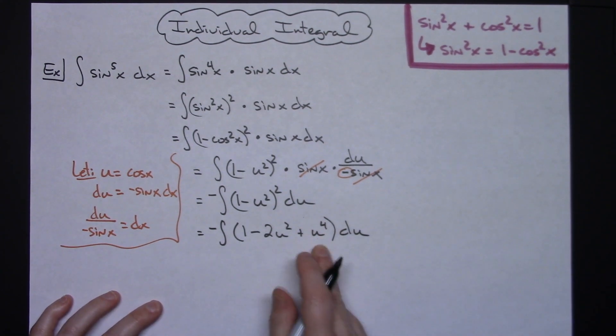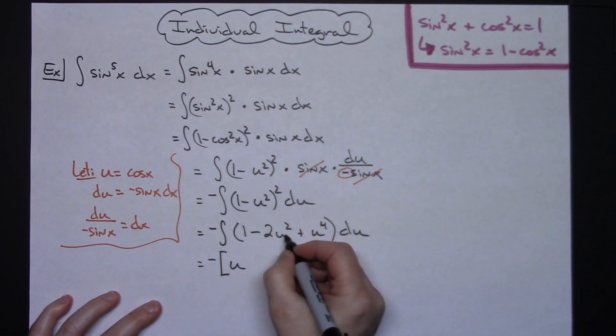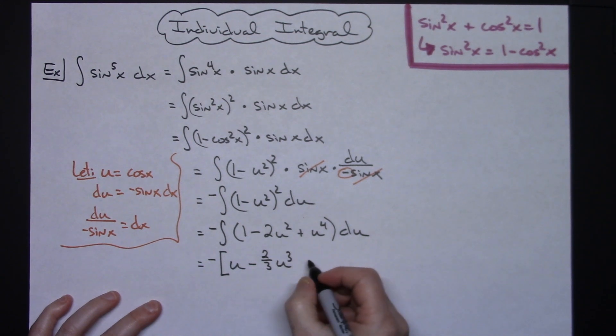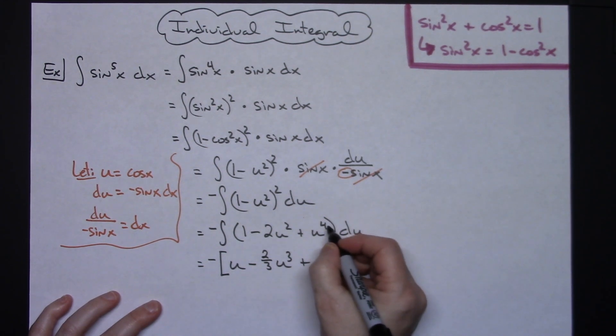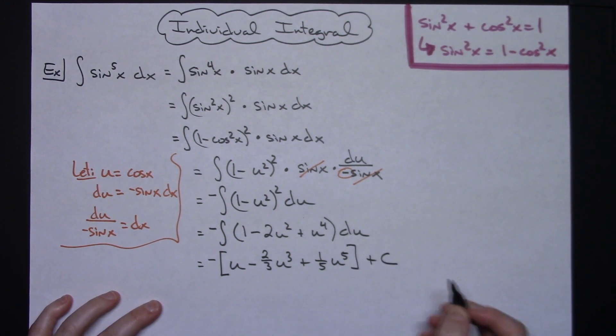From there this is a straight integration at this point. We'll have a negative out in front. Integrating 1 with du gives us u. Integrating here we'll add 1 which gives us 3, so that'll be minus 2 thirds u to the third. Adding 1 there gives us 5, so 1 fifth u to the fifth. And then we can add that plus c.